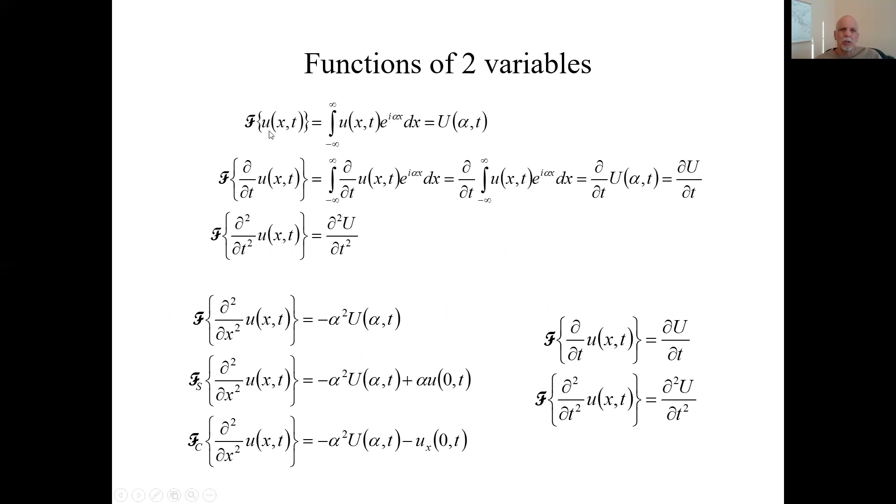When we do partial differential equations, we're talking about the function of two variables. And you can take the Fourier transform with respect to one of those variables. So if the time or original function is lowercase u, we'll call the Fourier transform big U. And in this case, we did it with respect to x. So the argument instead of x is going to be alpha here. So what are the transforms, the Fourier transforms of the partial derivatives of this lowercase u with respect to the other variable, the one you didn't take the Fourier transform with respect to.